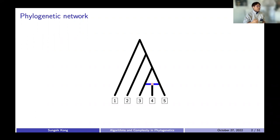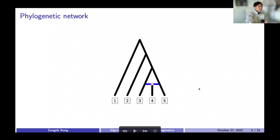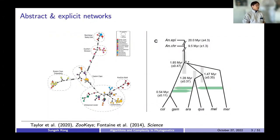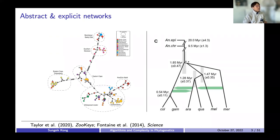Here we can say species four is the hybrid daughter of species three and species five. In the literature, networks are largely classified into abstract and explicit networks, and although those two are very different things, their distinction in practice is sometimes vague. An example of an abstract network is shown here on the left side and an example of an explicit network on the right side.